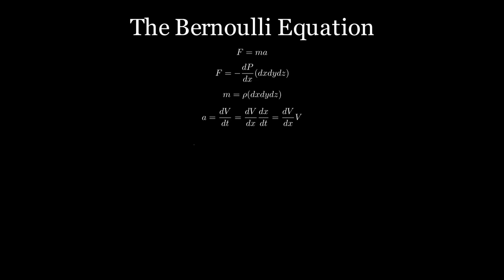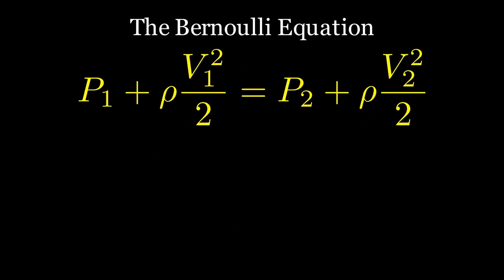we get acceleration equals dv by dx times v. Put all this back together, and we get the Euler equation. We then integrate across the points far ahead of the wing, and then just above and below the wing, along a single streamline. And our result is the Bernoulli equation.